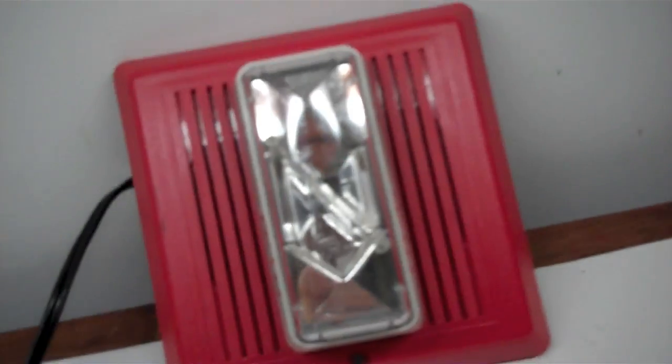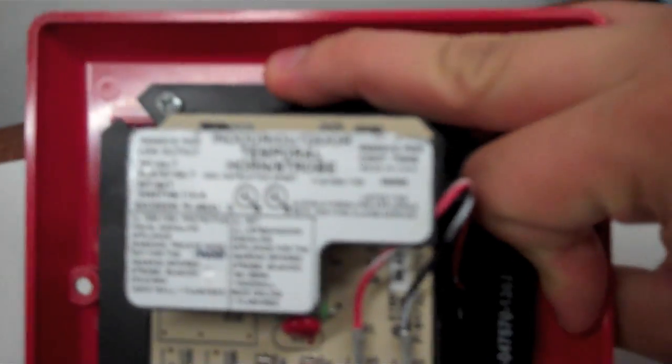First we will be testing the strobe only. Let's look on the back here, that's where the model number is, 7578AT.